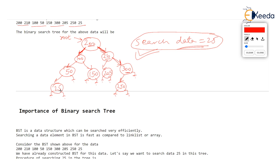So what's so special? The extraordinary fact is that we searched 25 by doing only four comparisons: first with 200, second with 100, third with 50, and fourth with 25. Only four comparisons were needed to find 25 in this binary search tree. That is a very small number of comparisons.